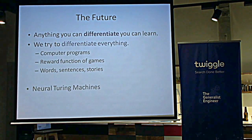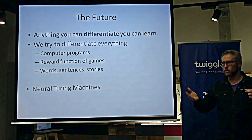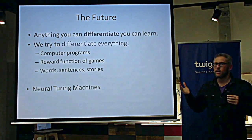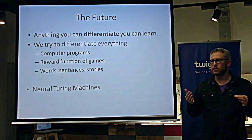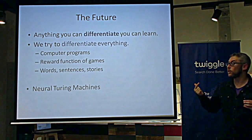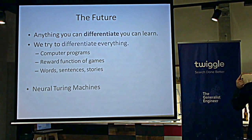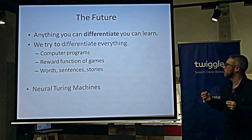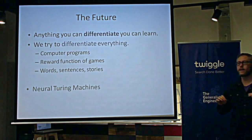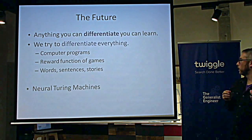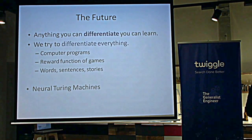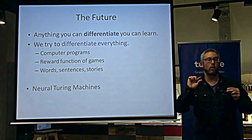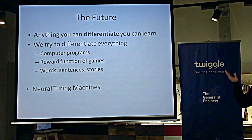So what's the future? The main thing we learned is that everything you can differentiate, no matter how deep, you can learn. Next we're going to differentiate things we don't think are differentiable — we're going to differentiate code, computer programs, the reward function of a game. There's already a deep network that plays Atari games really well. We're going to differentiate words, sentences, and stories. And a concept coming along is the neural Turing machine — a network that can interact with memory: read from memory, write to memory, apply operations on memory.